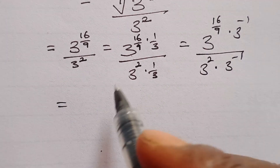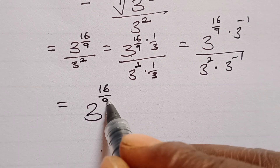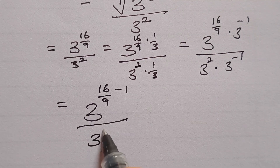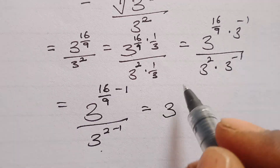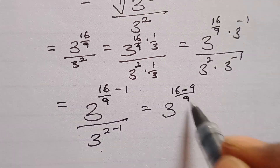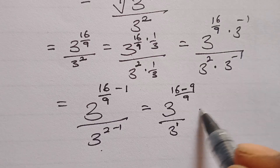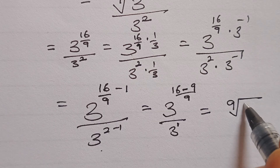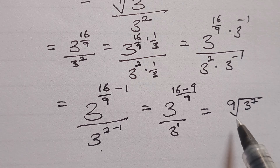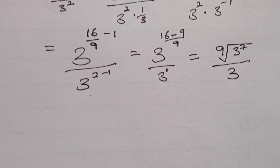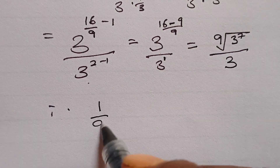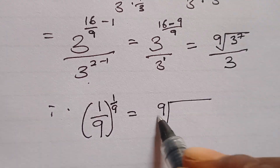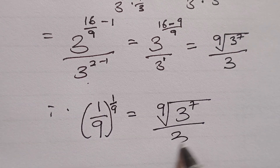From here, we have 3 raised to the power 16 divided by 9, minus 1, everything divided by 3 raised to the power 2 minus 1. That gives us 3 to the power 16 minus 9 over 9, divided by 3 to the power 1. So we are having the 9th root of 3 raised to the power 7, divided by 3. Therefore, 1 divided by 9, everything raised to the power 1 over 9, equals the 9th root of 3 to the power 7, divided by 3. Thank you for watching.